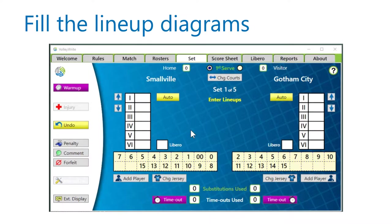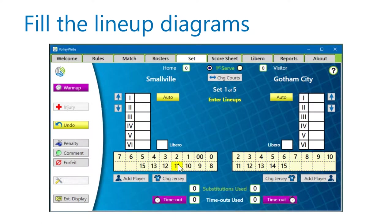To drag and drop, position the cursor arrow over a number on the bench, press the left mouse button, drag the cursor arrow to the position on the diagram, and release the mouse to drop the number. Or you can click on a position on the lineup diagram and then click on a number on the bench. Incidentally, this is also how you enter substitutions and Libero replacements when your set is in progress.